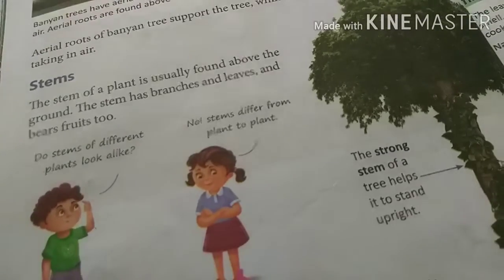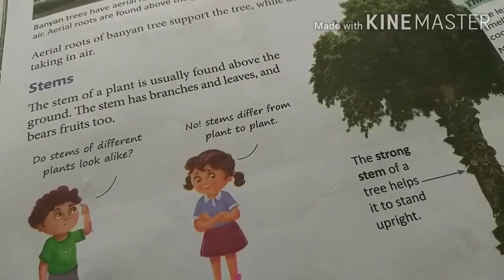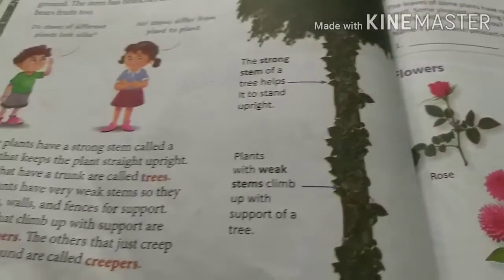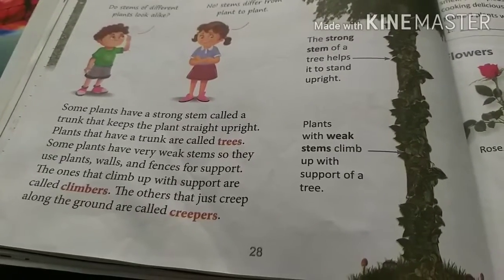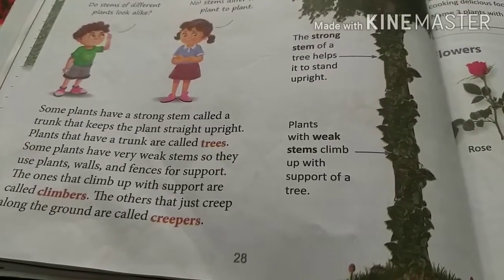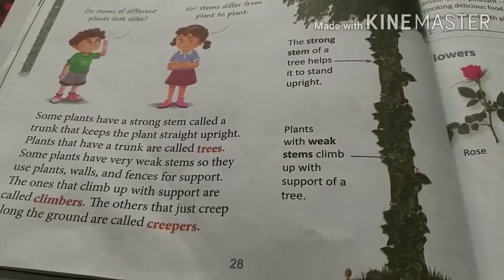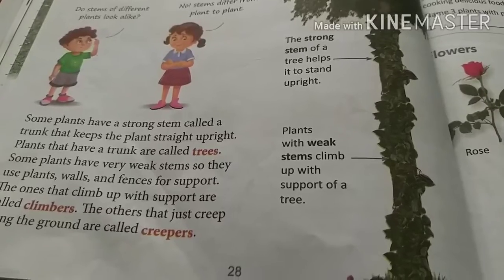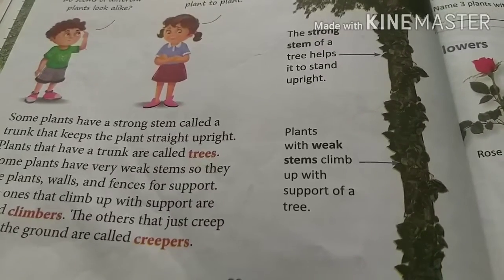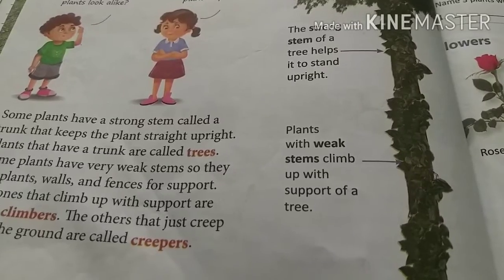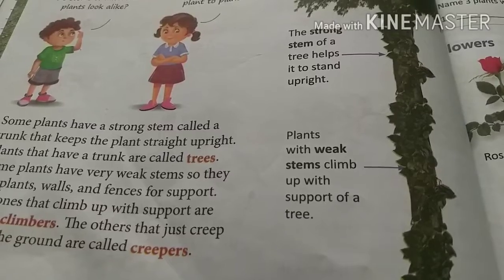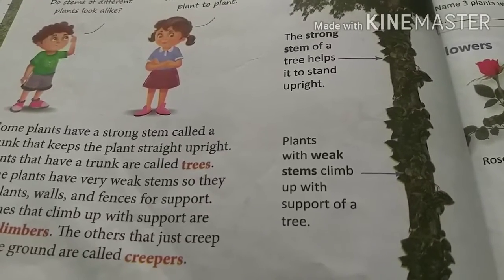Stems are found above the ground, and stems have branches, leaves, and bear fruits too. Trees are of different types — some have thick stems and some have thin stems, so stems are also of different types for different plants.